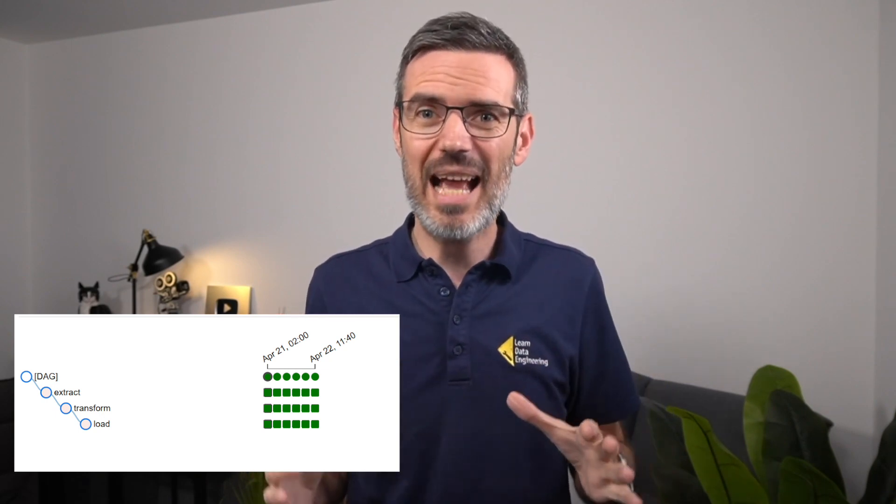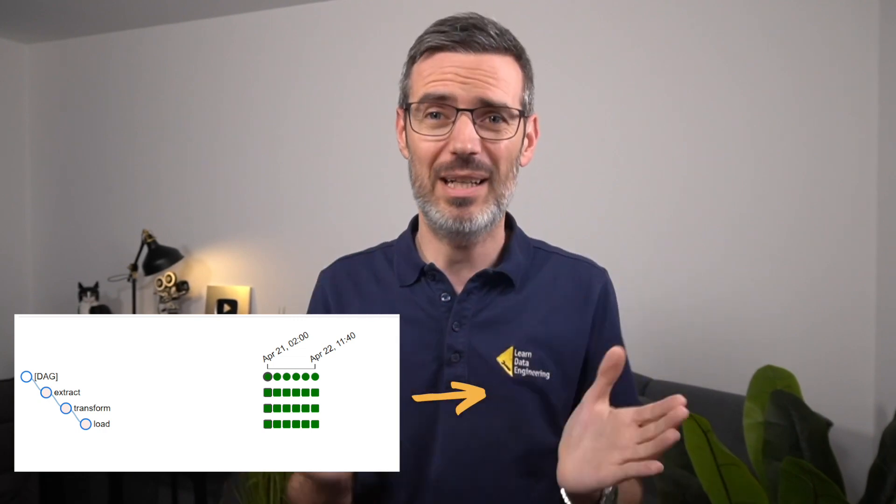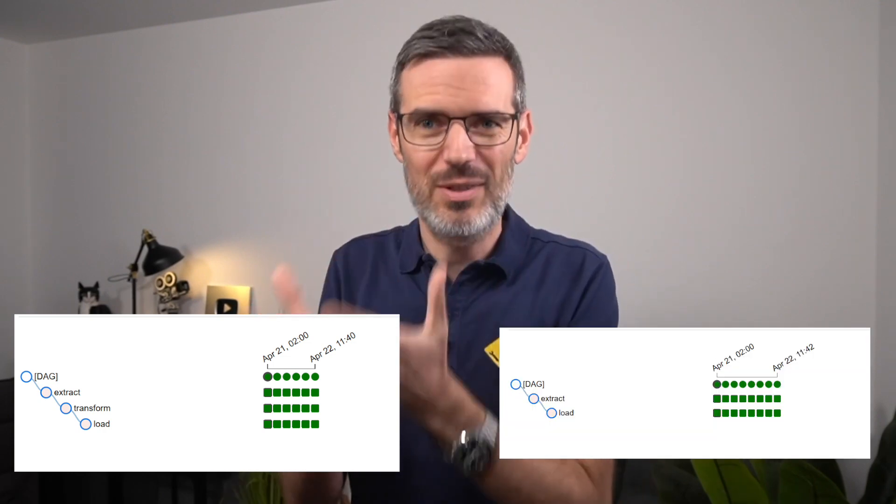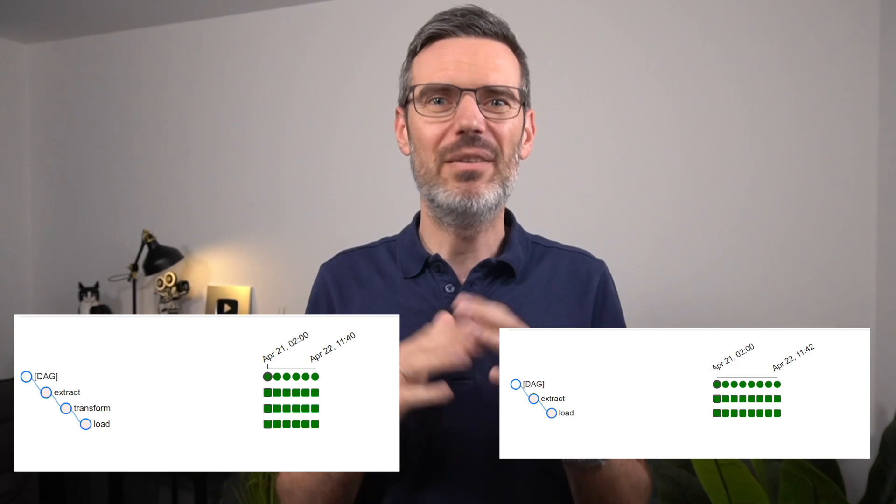DAG versioning is finally here. Until now, DAGs in Airflow were always treated as a single, ever-changing object. When you change your DAG code, those changes apply to everything — including the past. If you have a DAG with three tasks — extract, transform, and load — run it a few times, then later delete the transform task, in Airflow 2.x you'd go to the UI, look at an old DAG run, and the transform is gone from the whole graph. Even though the task did run at the time, there's no trace of it anymore, making it basically impossible to reproduce what happened.